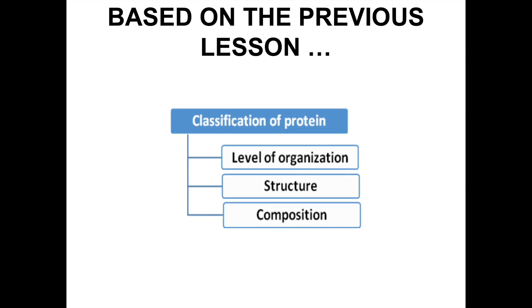Hi guys! Based on what we have learned in the previous lesson, there are three ways of how we can classify a protein: based on their level of organization, structure, and composition. We have learned about the level of organization in detail in the previous lesson. Now let's have a look on how to classify a protein based on their structure and composition.